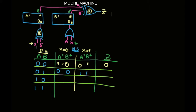Now let's see what happens when A is 1 and B is 0. B prime is 1 and A is 1. When X is 0: 0 XOR 0 is 1, 1 OR 0 gives 1, so we have 1, 1 again.